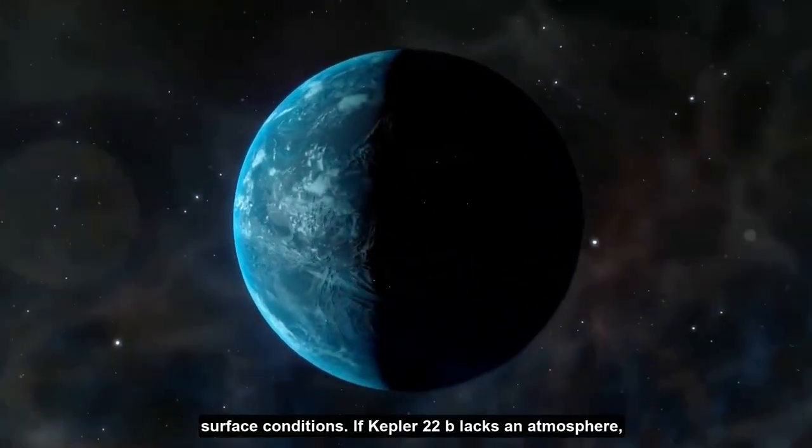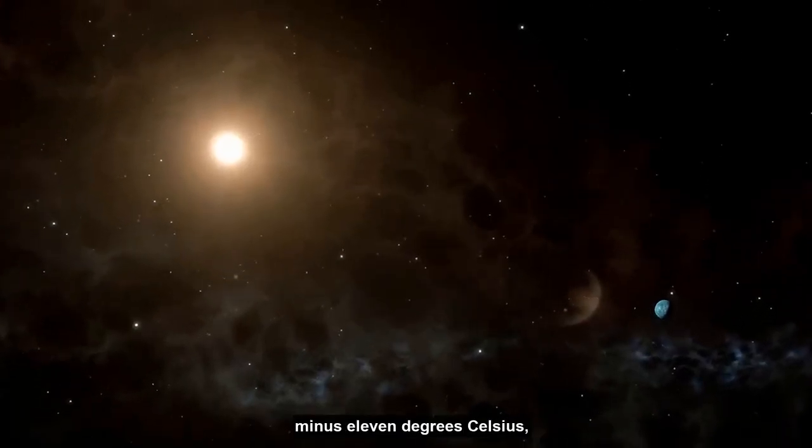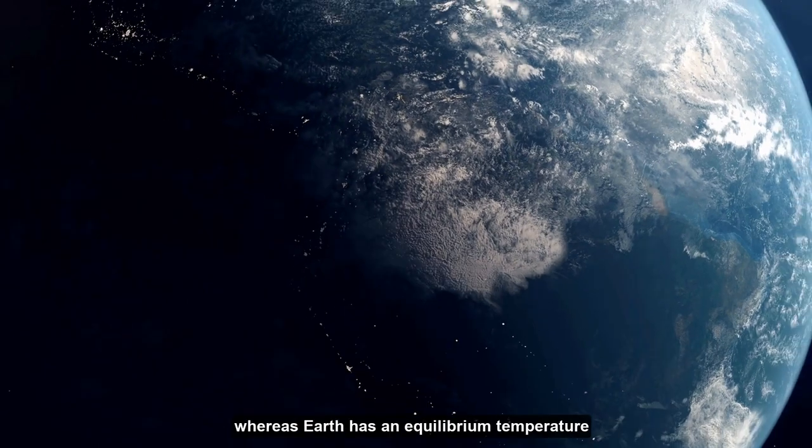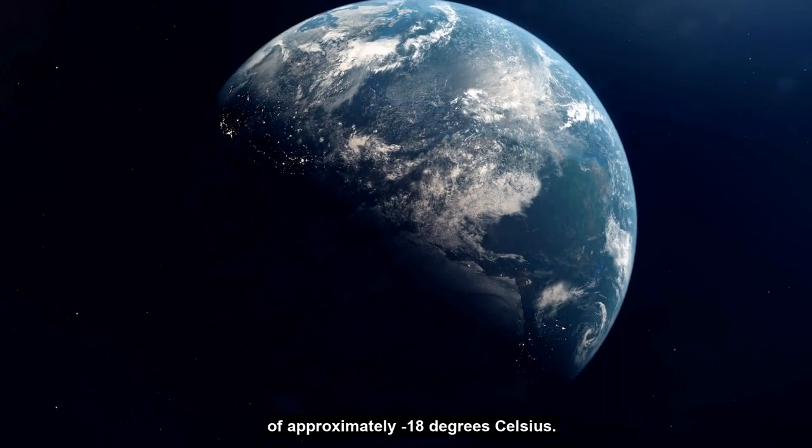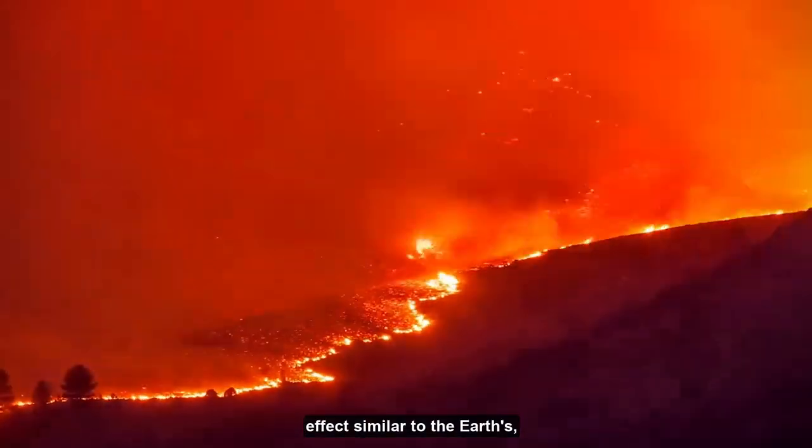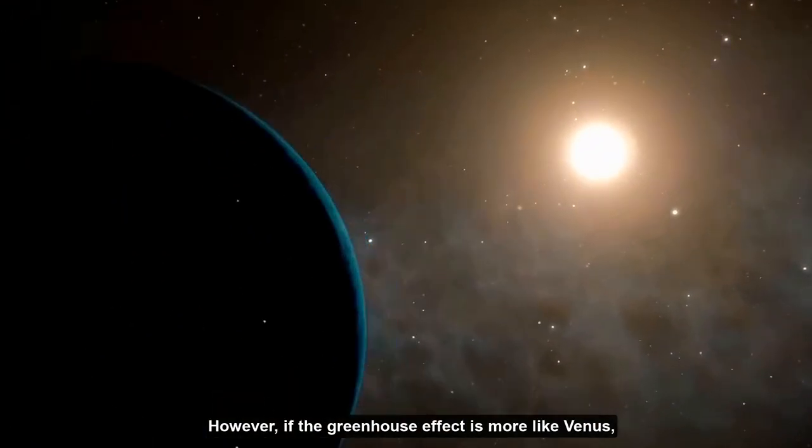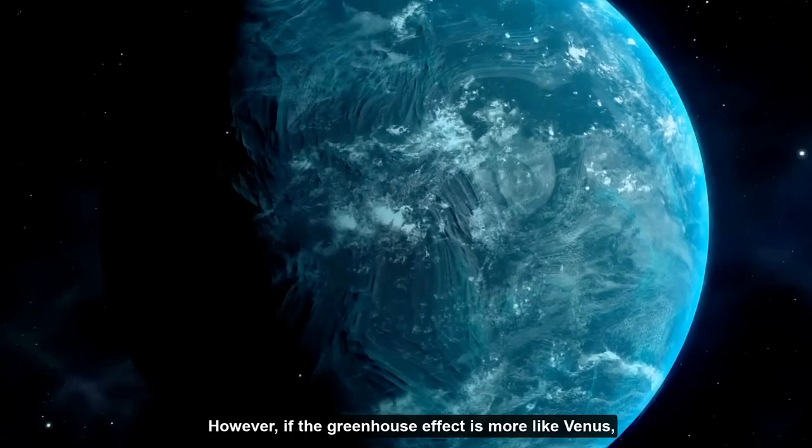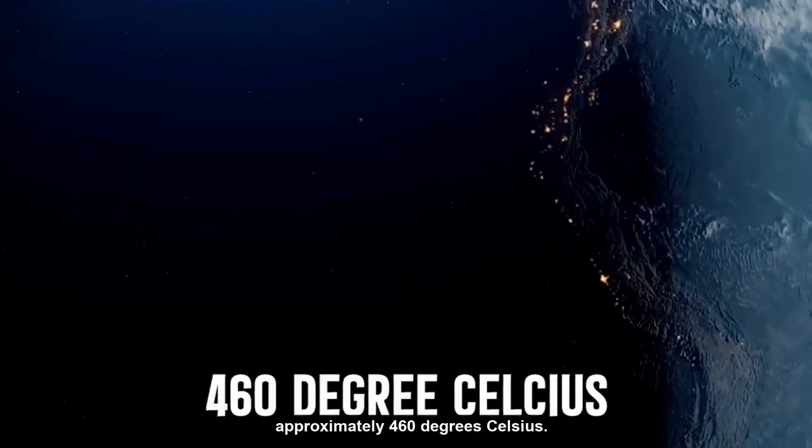If Kepler-22b lacks an atmosphere, its equilibrium temperature would be roughly minus 11 degrees Celsius, whereas Earth has an equilibrium temperature of approximately minus 18 degrees Celsius. If the planet's atmosphere produces a greenhouse effect similar to Earth's, temperatures could reach up to 22 degrees Celsius. However, if the greenhouse effect is more like Venus, the average surface temperature would be approximately 460 degrees Celsius.